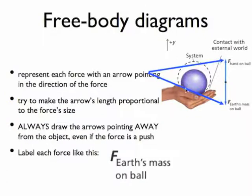Now here's some more instructions. You want to represent each force with an arrow and you want it to be pointing in the direction of that force. Now you try to make the arrow's length proportional to the force's size, so if you have a teeny force you would kind of draw them like that, if you have a teeny one and a long one. And you always want to draw your arrows pointing away from the object, even if the force is a push.